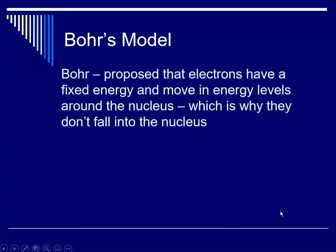So Niels Bohr, who also received a Nobel Prize, all these guys received Nobel Prizes, he proposed that electrons have a very fixed energy and move in these very specific energies around the nucleus. And they don't fall into the nucleus because electrons can only have very fixed quantities of energy.